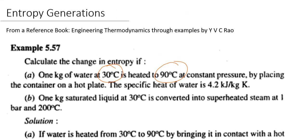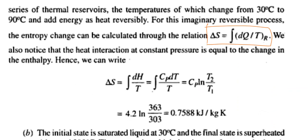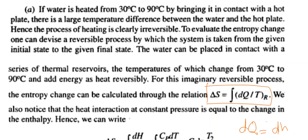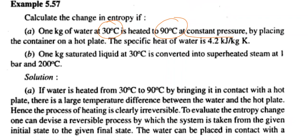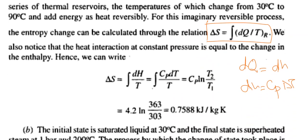For a reversible quasi-equilibrium process, we use ds = dq/T. Since this is also a constant pressure process, the heat transfer equals the change in enthalpy, so ds = dh/T. And dh = cp·dT.